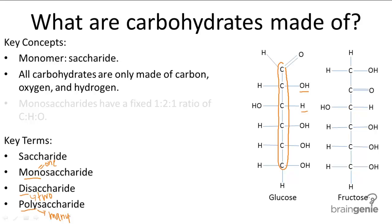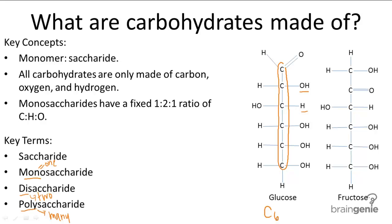A monosaccharide is really easy to recognize in written form if you remember that they always have a 1 to 2 to 1 ratio between carbon, hydrogen, and oxygen. For example, glucose is C6H12O6 — 6 to 12 to 6, which is a 1 to 2 to 1 ratio.